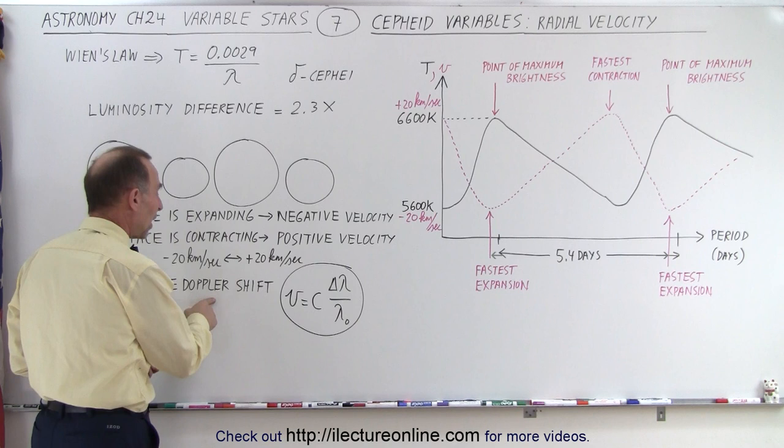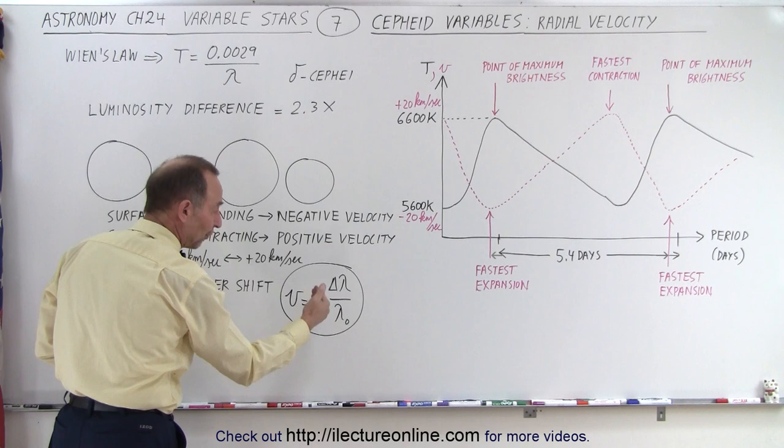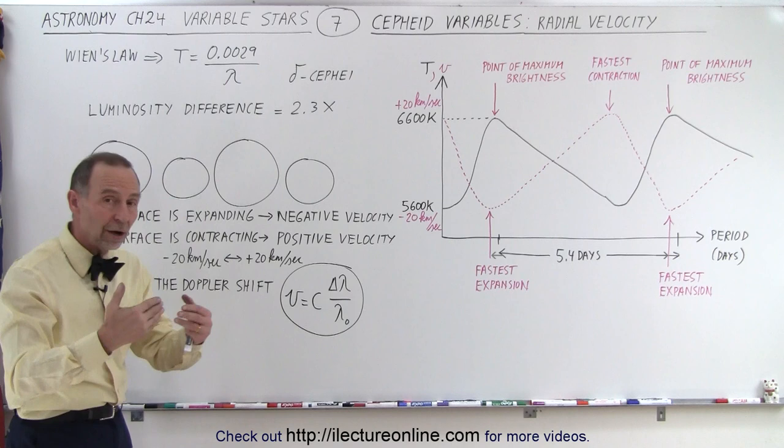So, if we then calculate that, the way we do that is we measure the Doppler shift in the change in the wavelength of the light coming from us, what the wavelength is when the surface is not moving, we multiply that ratio times the speed of light, and we get the velocity of the surface of that star.